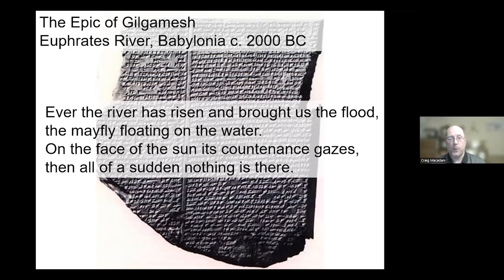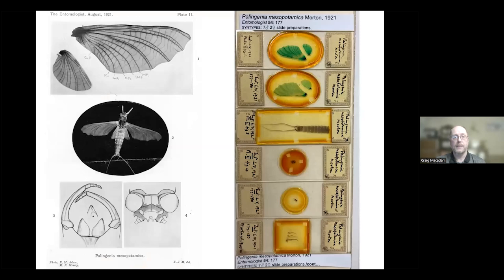Quite astonishingly, we can actually hazard a guess at what mayfly this was, even though it was 2000 BC. Thomas Soldan did detective work looking at literature from that period, piecing together the size, habits, and flight period of the mayfly. He proposed it was Mortogenesia Mesopotamica, described by Scottish entomologist Kenneth Morton from specimens from the Euphrates River. It's a large species on the wing in February, fitting the context perfectly.